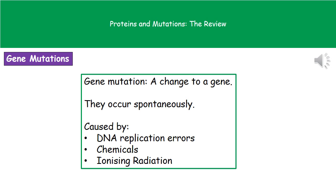The first one is just an error that occurs when the DNA is being replicated. The second one is the presence of certain chemicals, and the third one is if we're exposed to ionizing radiation.